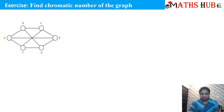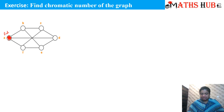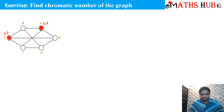First of all, let us start with vertex A and mark it with red color. Now, A is adjacent to B, so B cannot be marked red. A is adjacent to D, so D cannot be marked red. A is adjacent to F, so F cannot be marked red. Can we mark C red? Yes — C can be colored red because C is not adjacent to A.